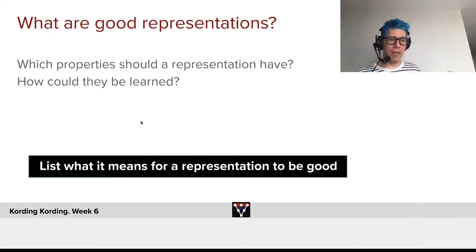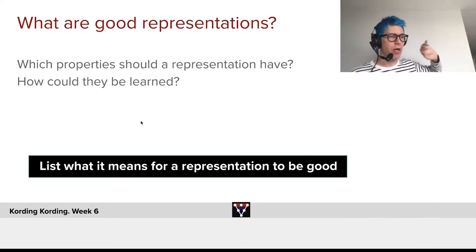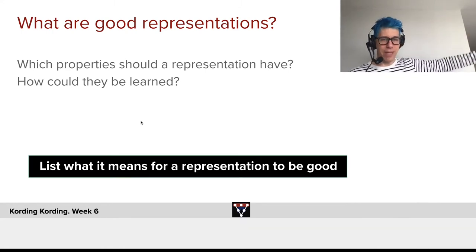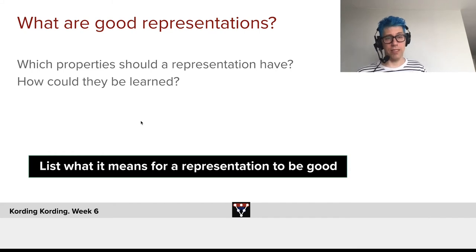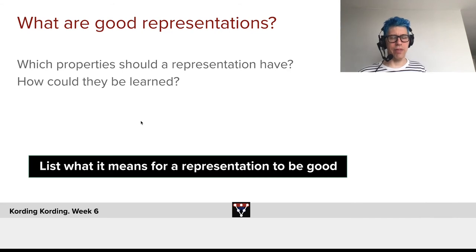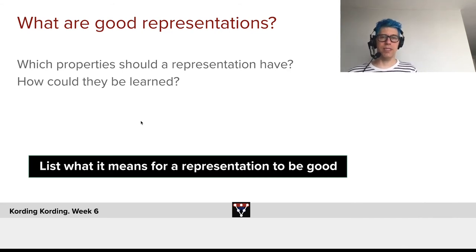Just to be clear about the setting: we're looking for a mapping of an image into a vector, so that the vector representation is useful for us. List criteria you can come up with that capture what it means for a representation to be good.